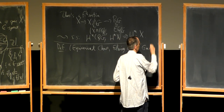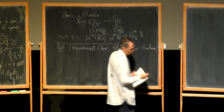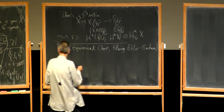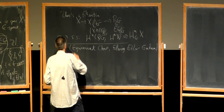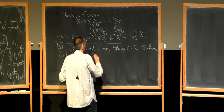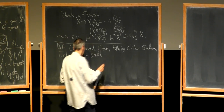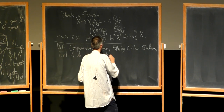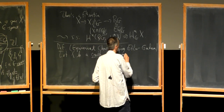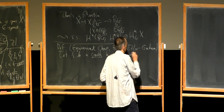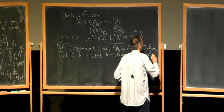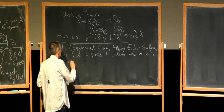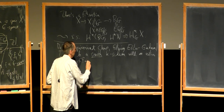Maybe to be lazy, I will just define this in the case of a smooth variety with a G-action. Suppose I have a smooth k-scheme with an action of an affine group scheme G of finite type over k.